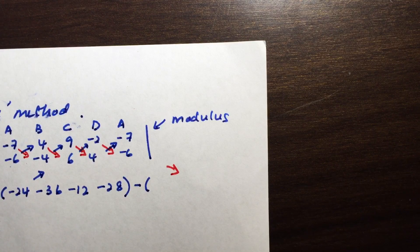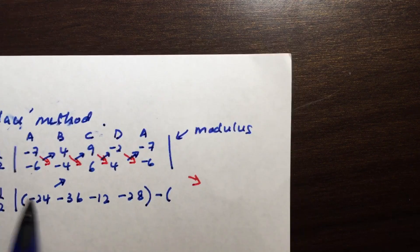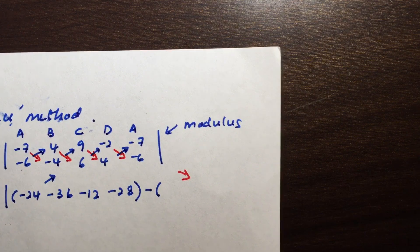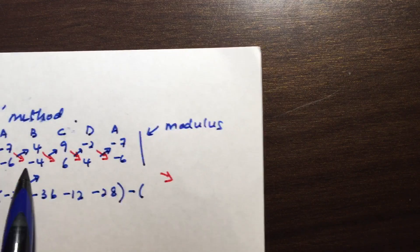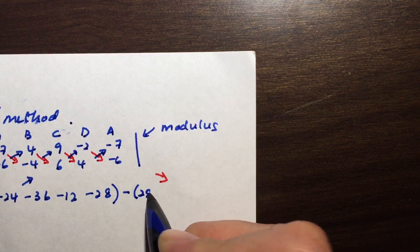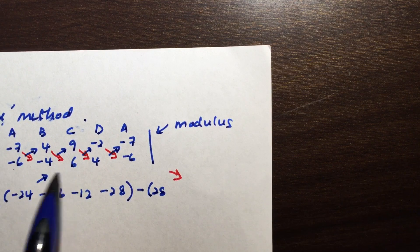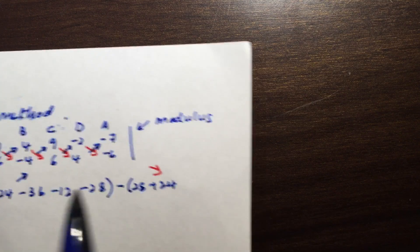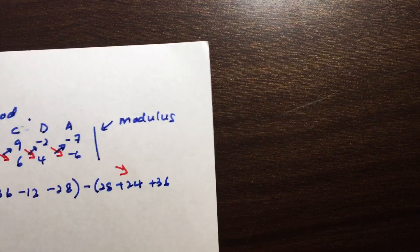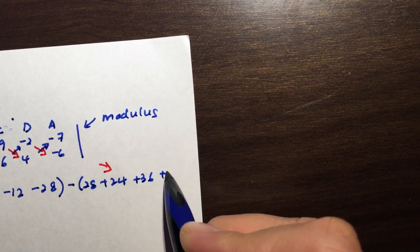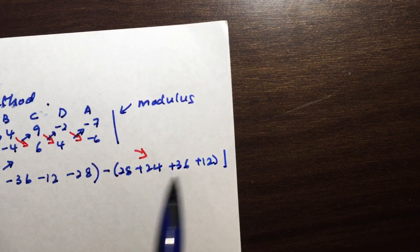What does it mean by the down group? I'm going to take again multiplying these two, multiplying these two, and so on. So negative 7 times negative 4 is going to give me 28, 4 times 6 will give me 24, 9 times 4 will give me 36, and negative 2 times negative 6 will give me 12. So this is my down group.